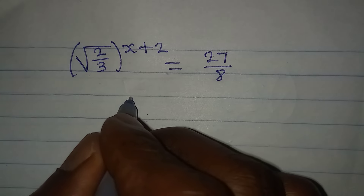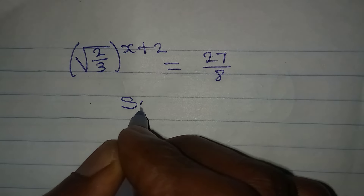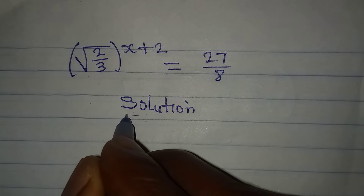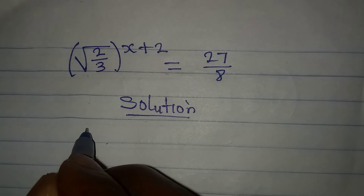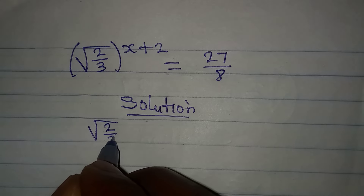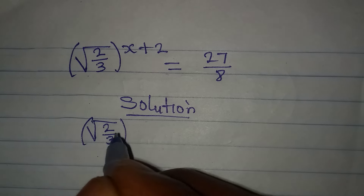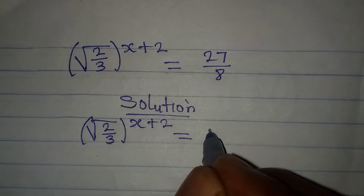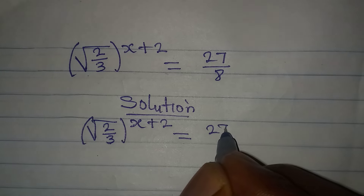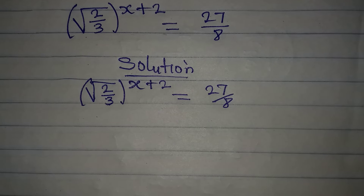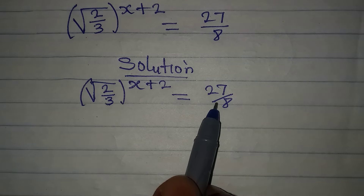Let's provide the solution to this problem. We have square root of 2 over 3 to the power of x plus 2, equal to 27 divided by 8. This is not that hard — what we need to do is make sure that the bases are the same.